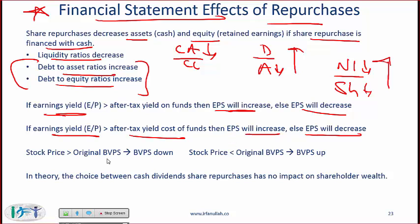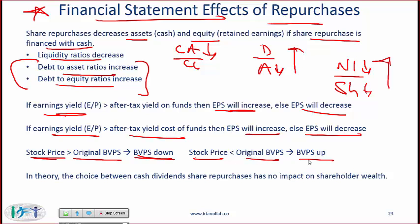Regarding the impact on book value per share: if you buy back stock at a price greater than the original book value per share, the book value per share goes down — buying something expensive is bad. On the other hand, if the stock price is less than the original book value per share, the book value per share goes up — buying at great value is good.